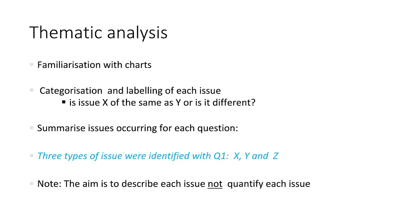Once you have completed your data management phase and have a set of completed matrices, you can start to categorise and label what issues have occurred. Spend time familiarising yourself with your charts, and highlight and summarise the main issues with each question tested. Cluster similar issues together and ask yourself whether the issue in case 1 is the same type of problem as in case 2. The goal is to have a comprehensive list of the different types of problems that arose. Importantly, the aim is not to quantify how often each issue occurs — since cognitive interviews typically involve only 8 to 20 purposefully selected people, we cannot infer how common problems will be in the general population.